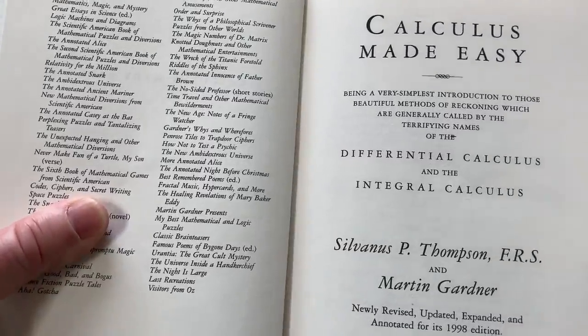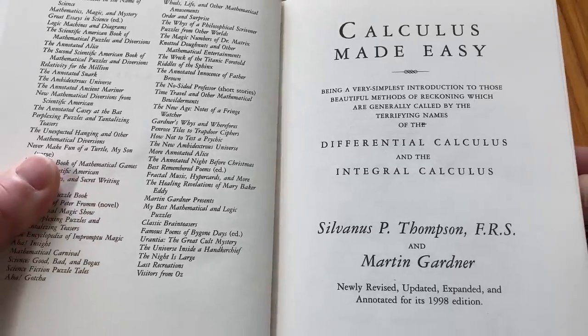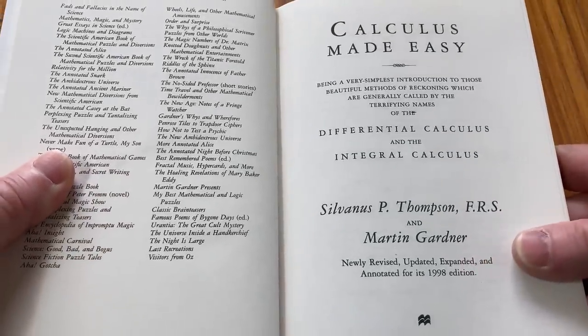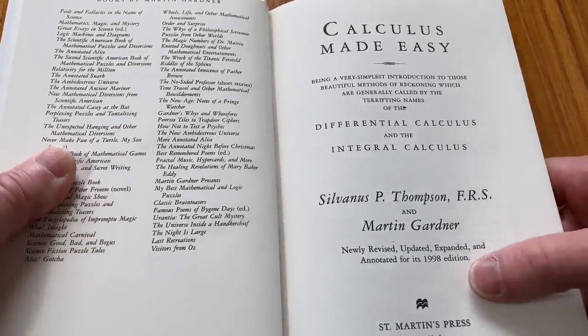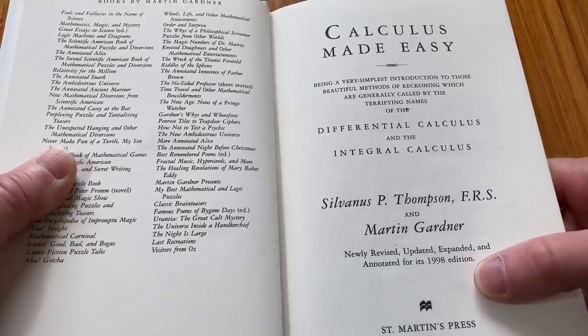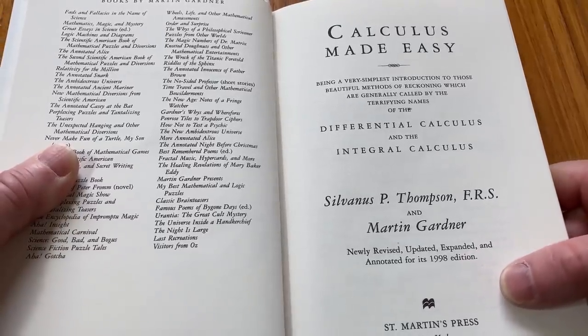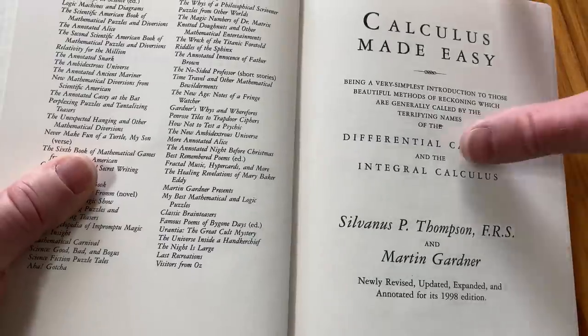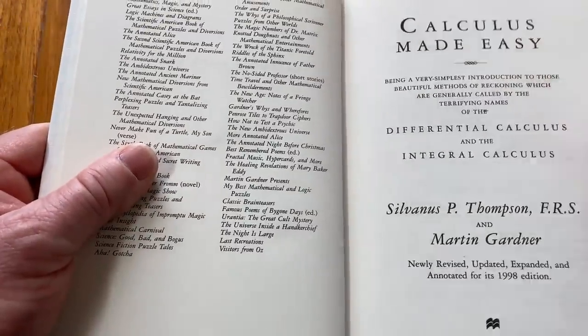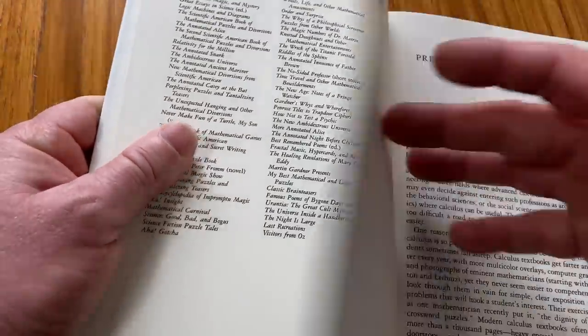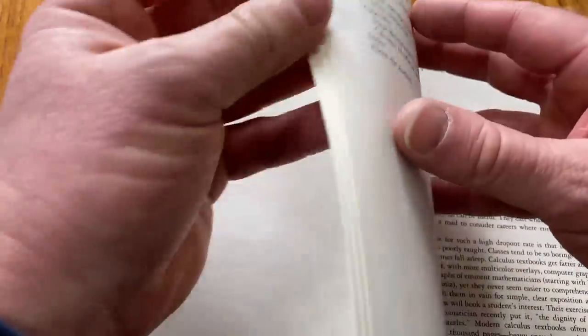Here's the inside cover. Calculus Made Easy, Differential and the Integral Calculus. Sylvanus P. Thompson and Martin Gardner. And this is newly revised, updated, expanded and annotated for its 1998 edition. So there's newer editions now. This is an older one. And obviously there's certainly older ones than this. This is just the one I happen to have.